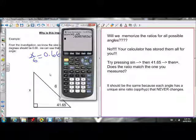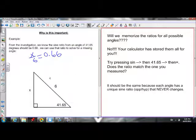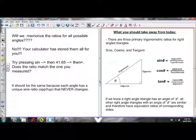So every right-angle triangle with an angle of 41.65 will have a sine ratio of 0.66. Sine being opposite over hypotenuse. So this is the same because each angle has a unique sine ratio that never changes. So what I want to take away from this is the fact that there are three ratios, and if we know a right-angle triangle has an angle of theta, if we know the angle, we know all other right triangles with that same angle are similar and therefore have equivalent ratios. Those ratios are the same for all similar triangles.